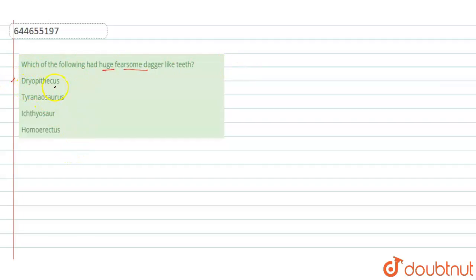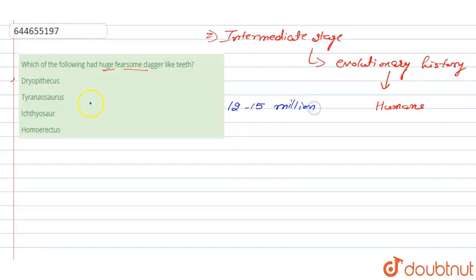The first option is Dryopithecus. What is this Dryopithecus? This one is the intermediate stage of the evolutionary history of human beings, the evolutionary history of humans. When we talk about this stage, Dryopithecus is indeed 12 to 15 million years old. It is the 12 to 15 million year old fossil of the primates.